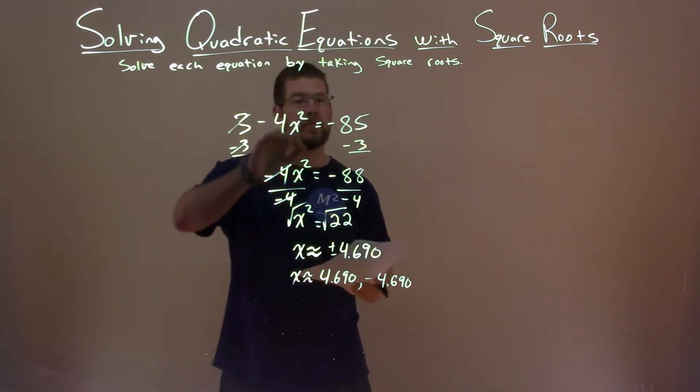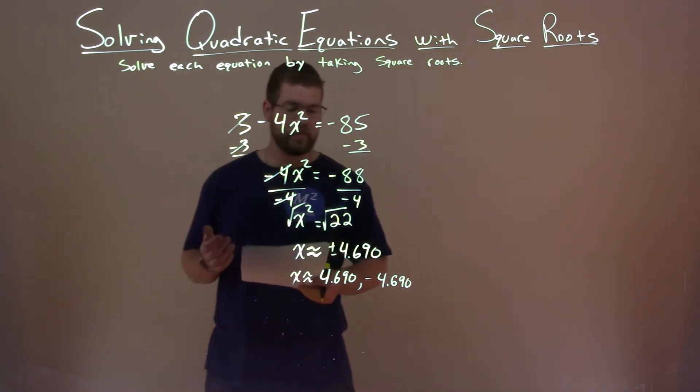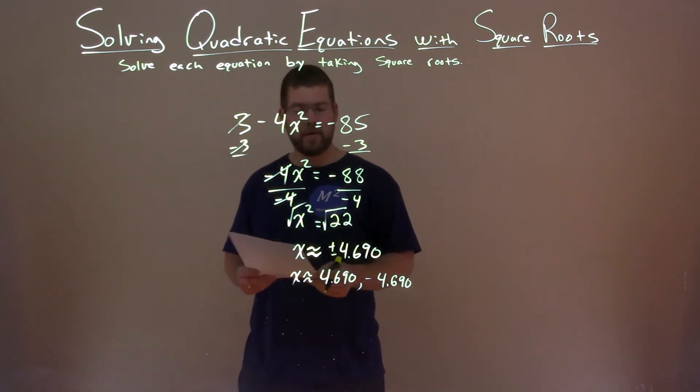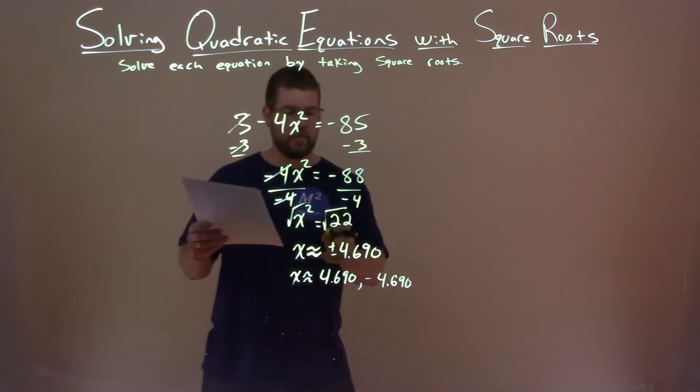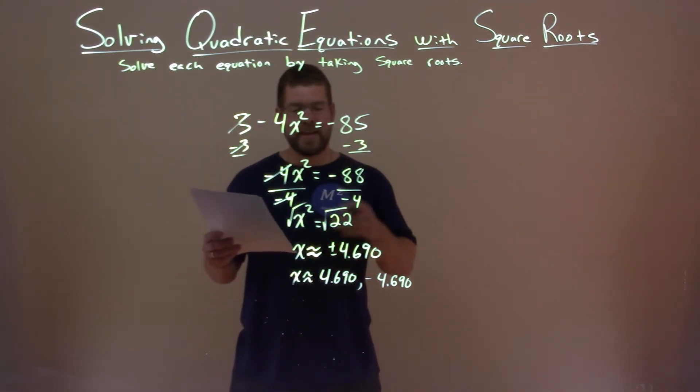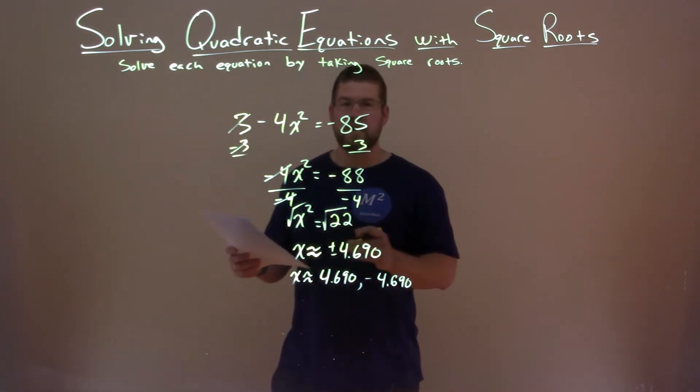Plug both of those back into our original equation and it would make it true. So again, our final answer here, rounded: x is approximately positive 4.690 and negative 4.690.